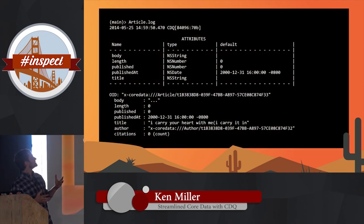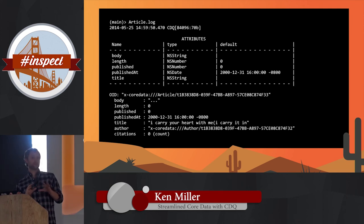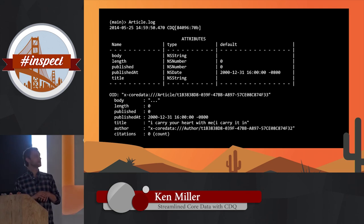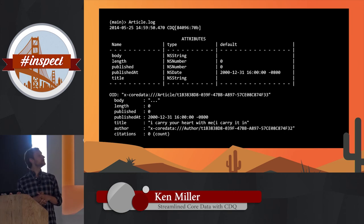I've made it easy to print out your object on the command line. There is a native format that Core Data has, which I think is fairly terrible — it's kind of a big garbage dump of your whole tree. So I made that nicer.